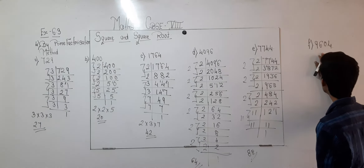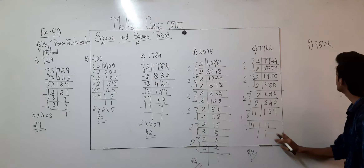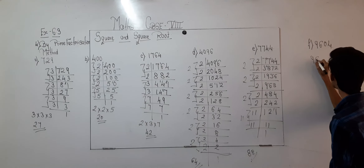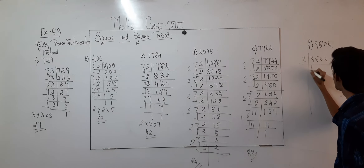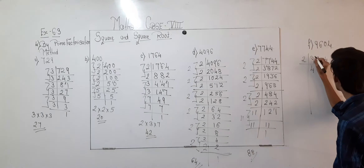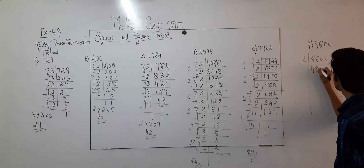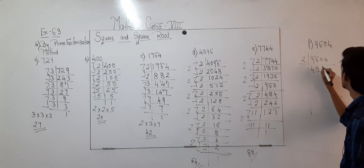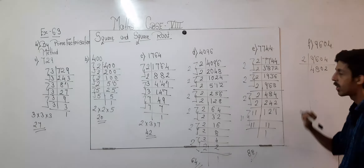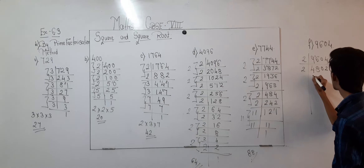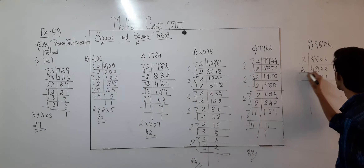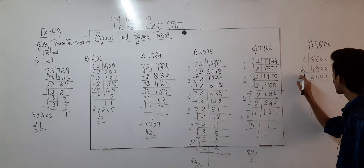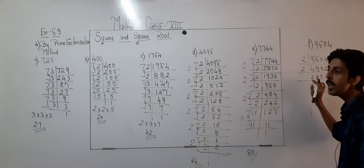Now moving on to the last question, which is 9604. Starting: 2 times 4 is 8, 1 remaining; 2 times 8 is 16; 2 times 0 is 2; 2 times 2 is 4; again 2 times 2 is 4; 2 times 2 is 6. Now 1 is remaining. What is the next prime number after 2? That is 3. But in the table of 3, 3 times 8 is 24 and 1 is not coming, so we try with 5. Five is also not possible, so we try with 7.